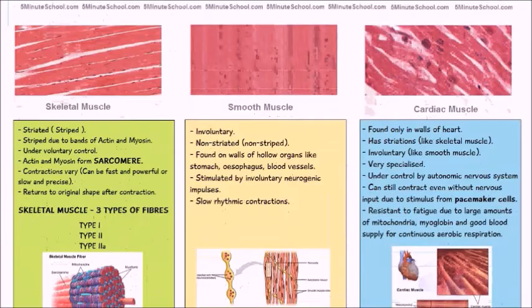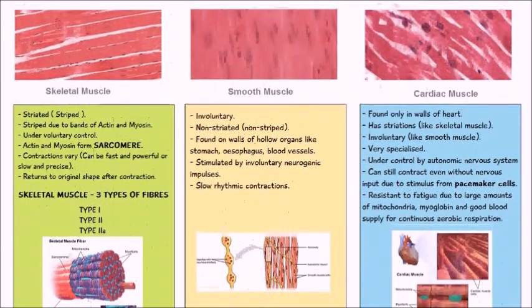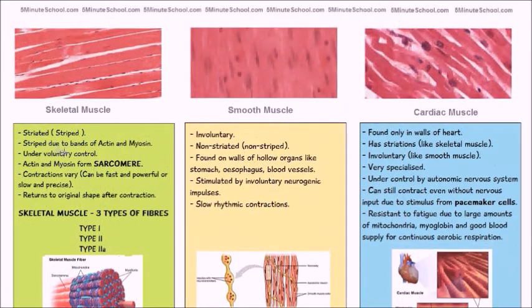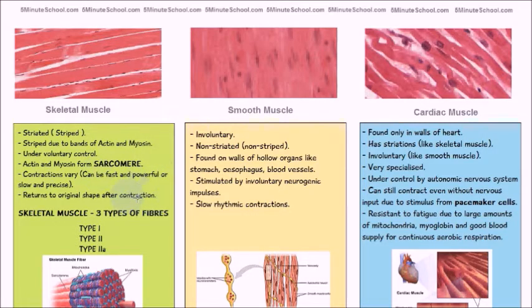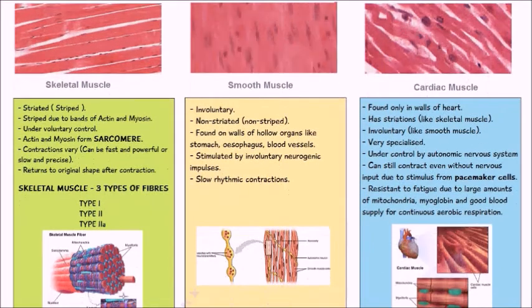We'll first begin by talking about skeletal muscle. It's striated, so it has stripes. The stripes are actually due to bands of actin and myosin, and actin and myosin are what form the sarcomere. The sarcomere is what forms the myofibrils, which you can see from this diagram here. The myofibrils are made up of sarcomeres which contain actin and myosin.